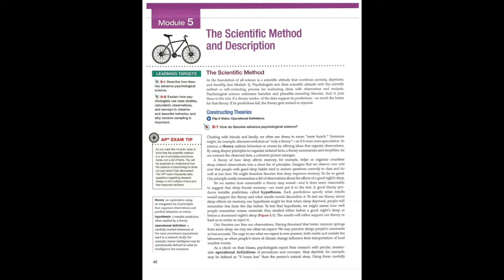See Module 1. Psychologists arm their scientific attitude with the scientific method, a self-correcting process for evaluating ideas with observation and analysis. Psychological science welcomes hunches and plausible-sounding theories, and it puts them to the test. If a theory works, if the data support its predictions, so much the better for that theory. If its predictions fail, the theory gets revised or rejected.